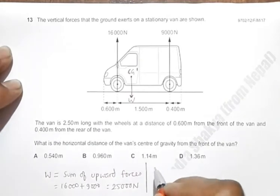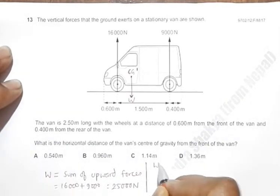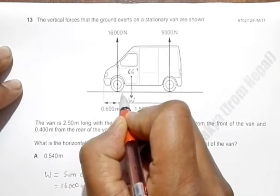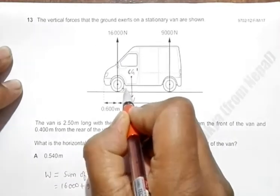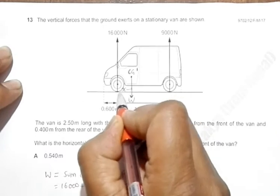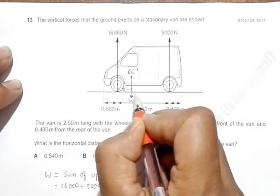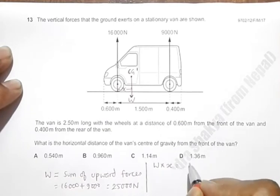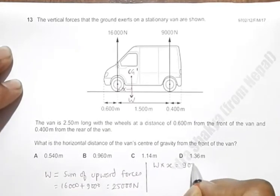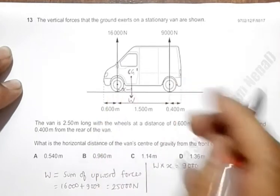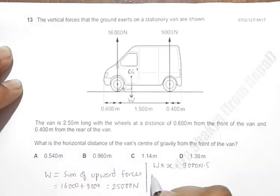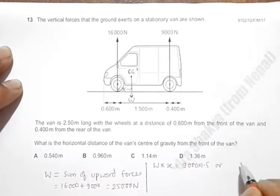By applying the principle of moments, we must have W into this distance, so let me say the distance is x. X is the distance here from the fulcrum point to the line of action of W. So W into x equals 9,000 into this distance, which is 1.5 meters.